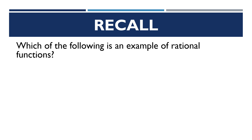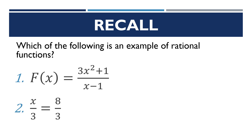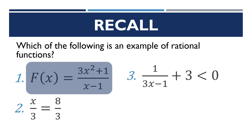Let us recall first: which of the following is an example of rational functions? The correct answer is number 1 — f(x) is equal to 3x squared plus 1 divided by x minus 1. From the definition of a rational function, it is a function in the form f(x) = p(x) over q(x), where p(x) and q(x) are polynomial functions, and q(x) should not be equal to 0 because it will make the function undefined.